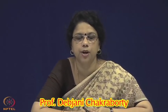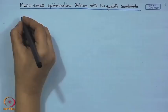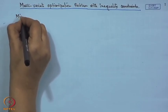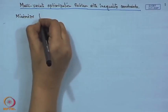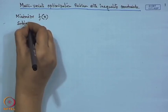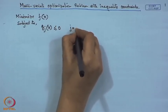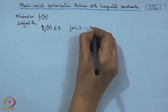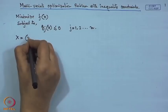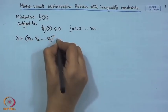Today, we are dealing with the mathematical programming problem that is the non-linear programming problem with inequality constraints. We will develop the necessary and sufficient conditions for handling such problems. Let us consider a general non-linear programming problem where n number of decision variables are there and m number of inequality constraints are there. The problem is: minimize f(x) subject to g_j(x) ≤ 0, where j runs from 1 to m, and x is an n-dimensional vector in R^n.